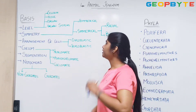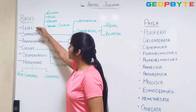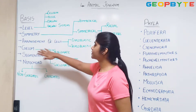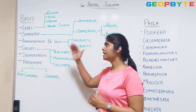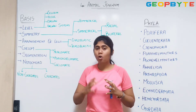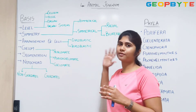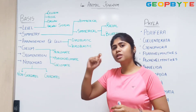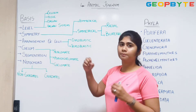Here, these are the levels: symmetry, arrangement of cells, coelom, segmentation, notochord. These are the six bases on which the classification of animals is done. Now let us see what each of these bases means.